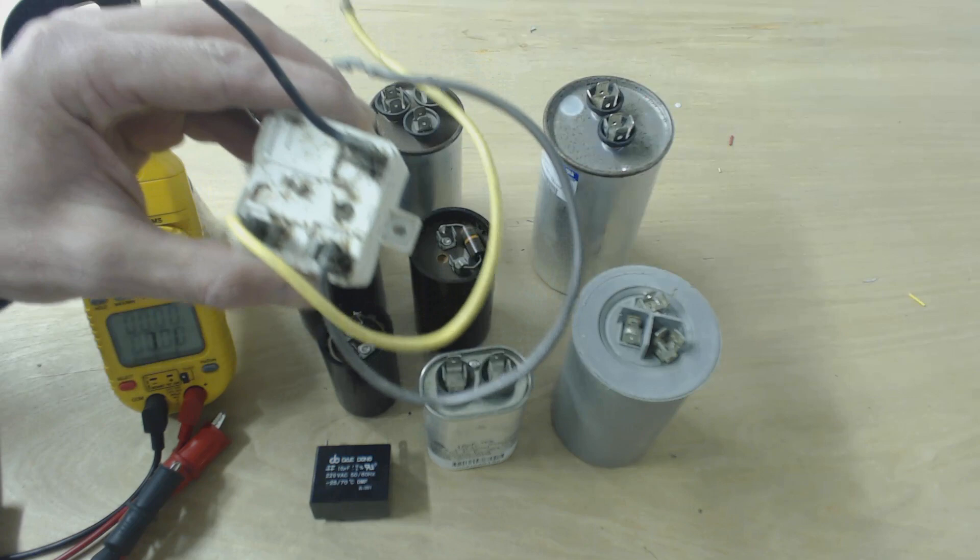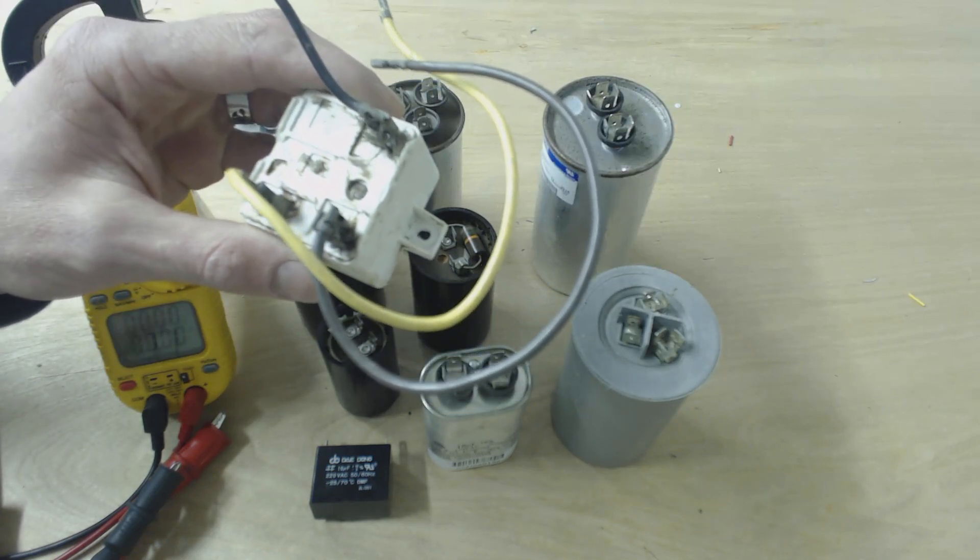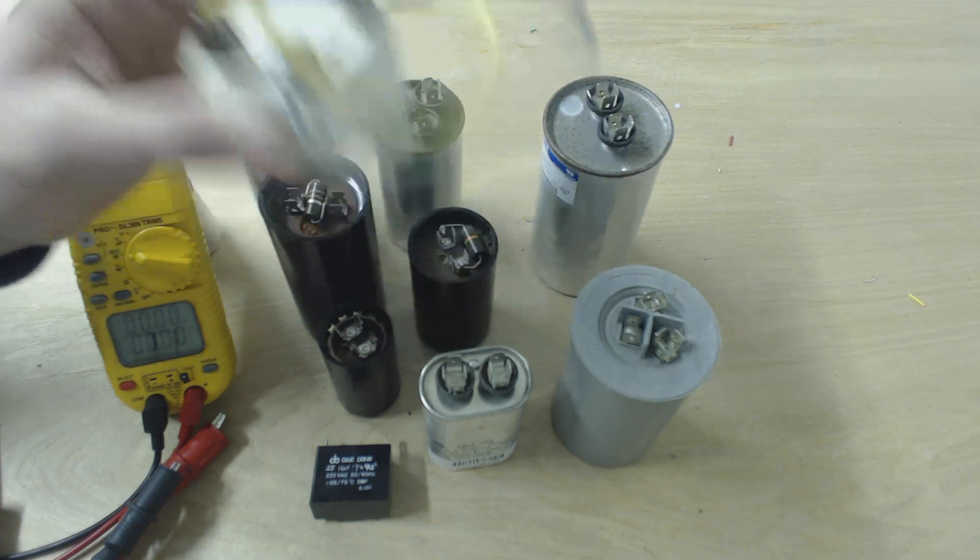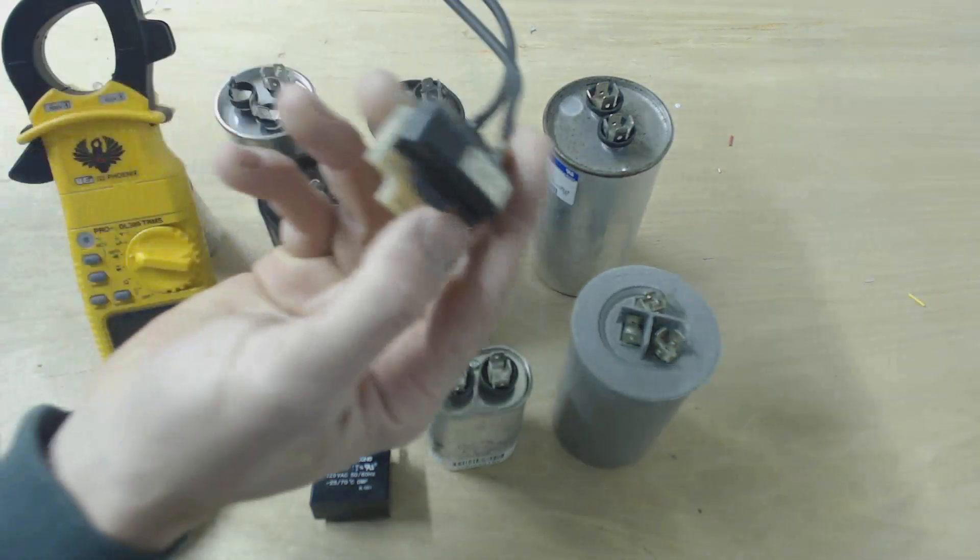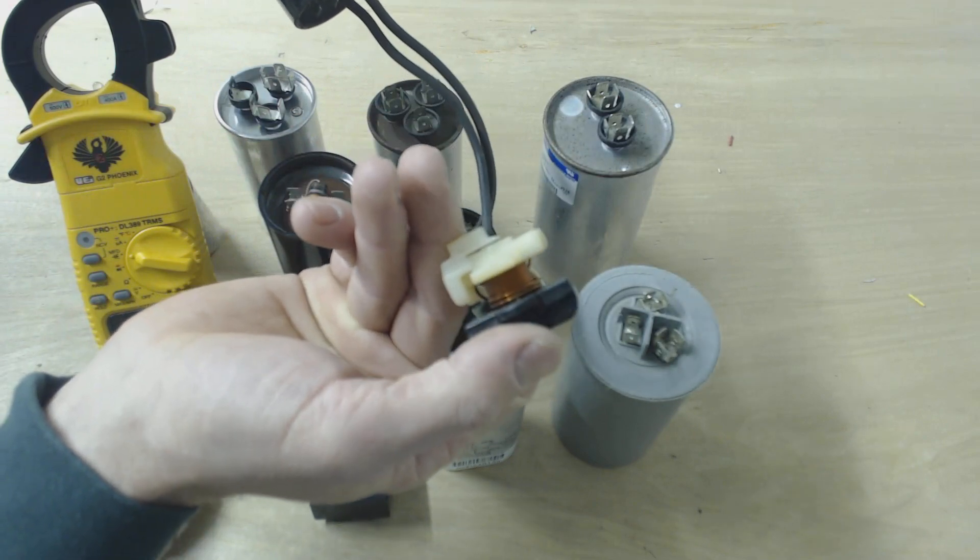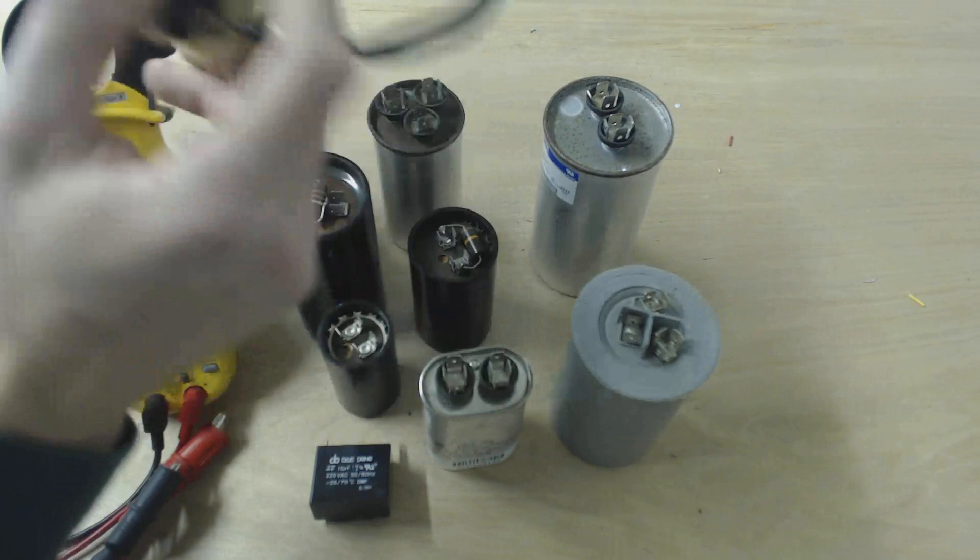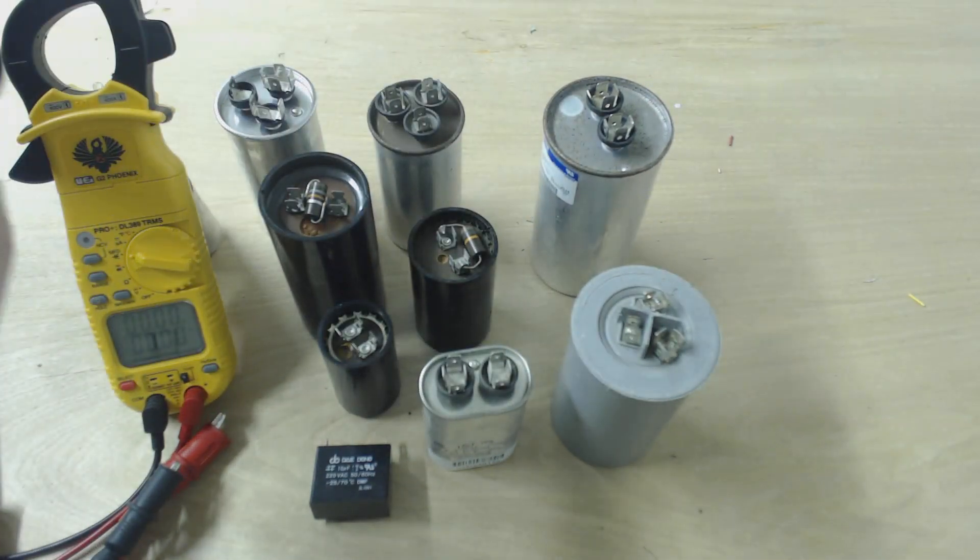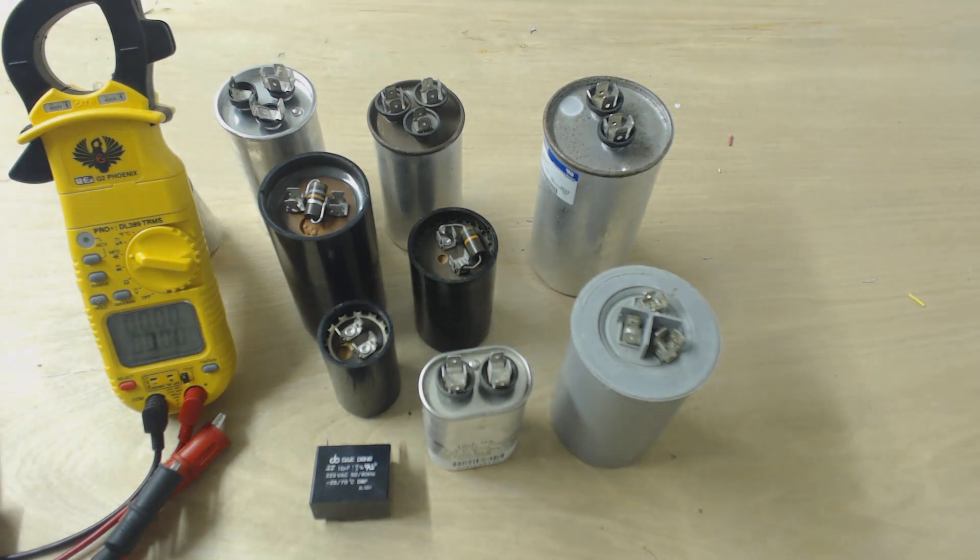Something like this is part of a hard start system, hard start capacitor system. And then you have another relay that looks like this, and that would be kicking the capacitor out just due to high amperage. You have other ones that kick it out just due to high heat, and that's just there to start the capacitor.